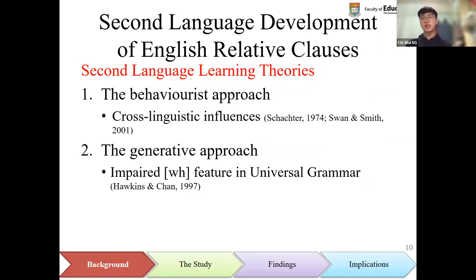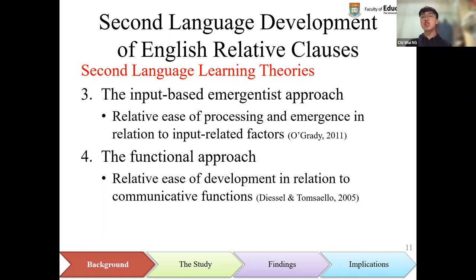Now let's start with some theoretical background. Different second language learning theories explain the difficulty in second language development of English relative clauses from different perspectives. The behaviorist approach and generative approach attribute second language learners' difficulty to cross-linguistic influences and their failure to reset the parameter of WH feature in universal grammar, respectively. The input-based emergent approach believes that relative clauses with more frequent and salient occurrence in input would be acquired more easily, while the functional approach believes that relative clauses with clearer communicative functions are developed more easily by learners.